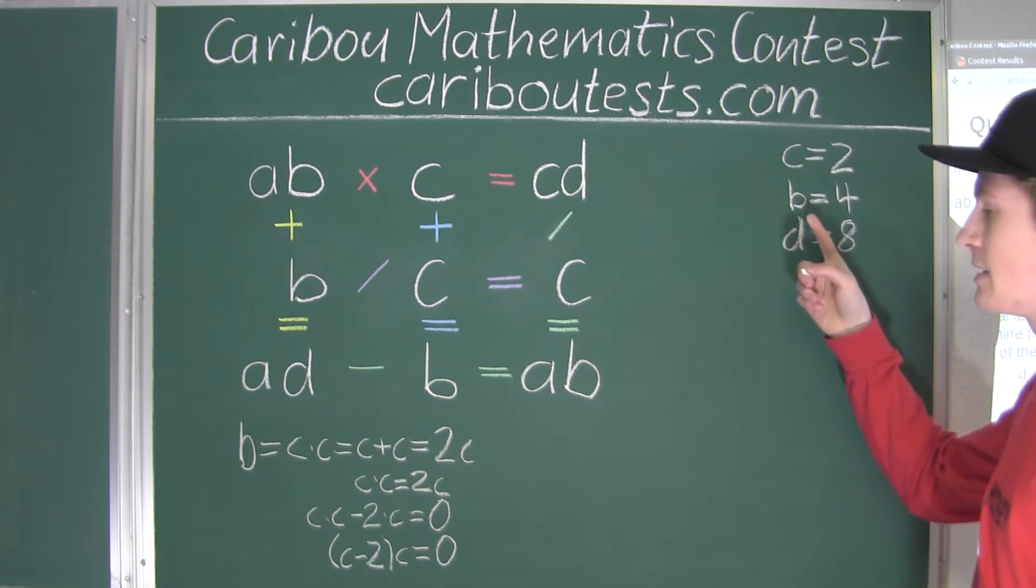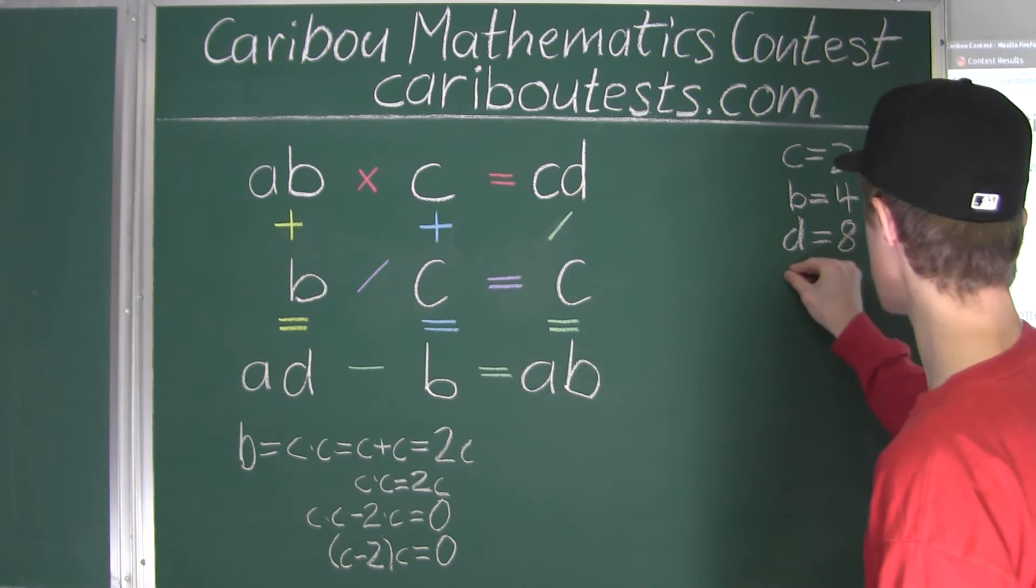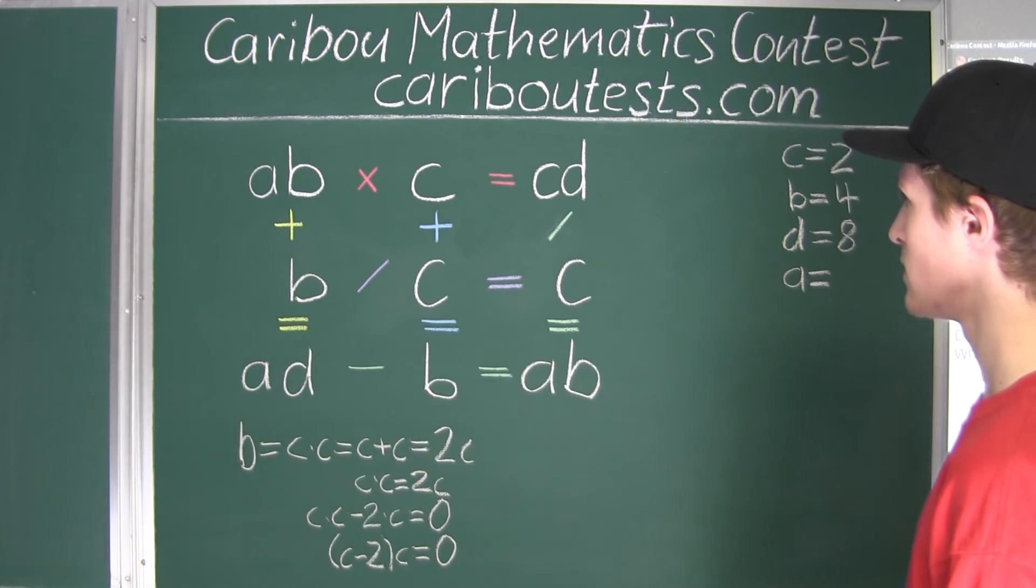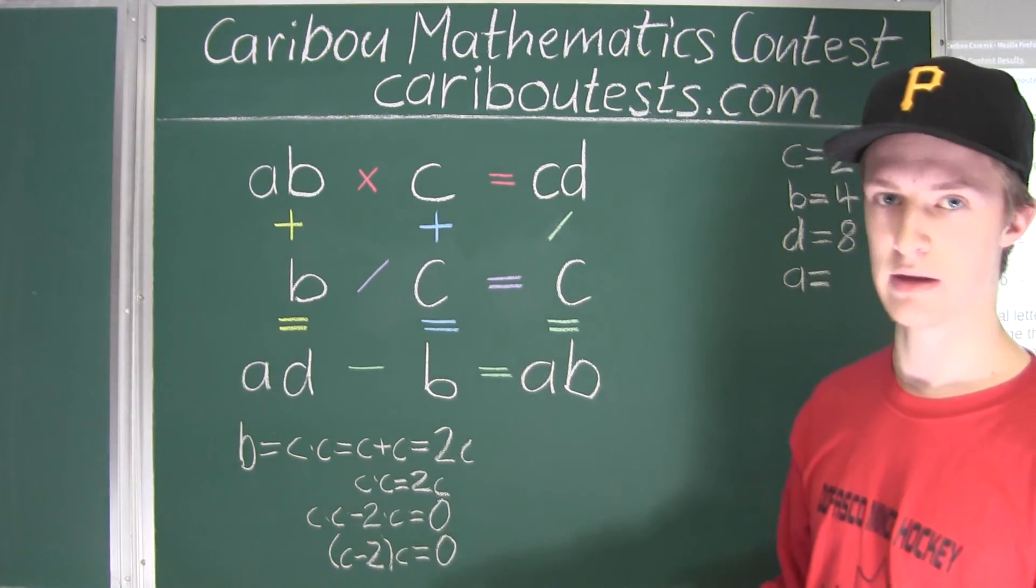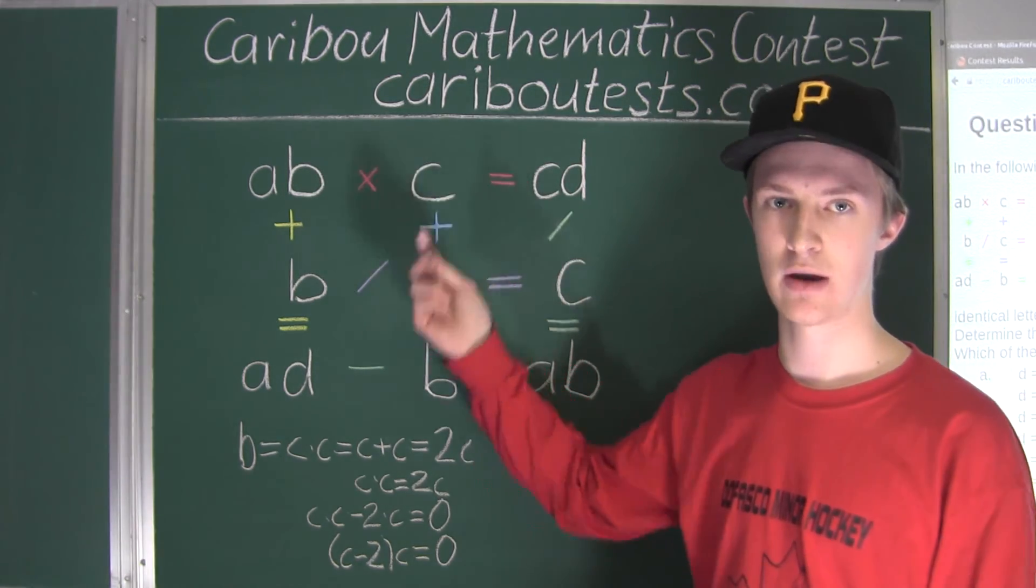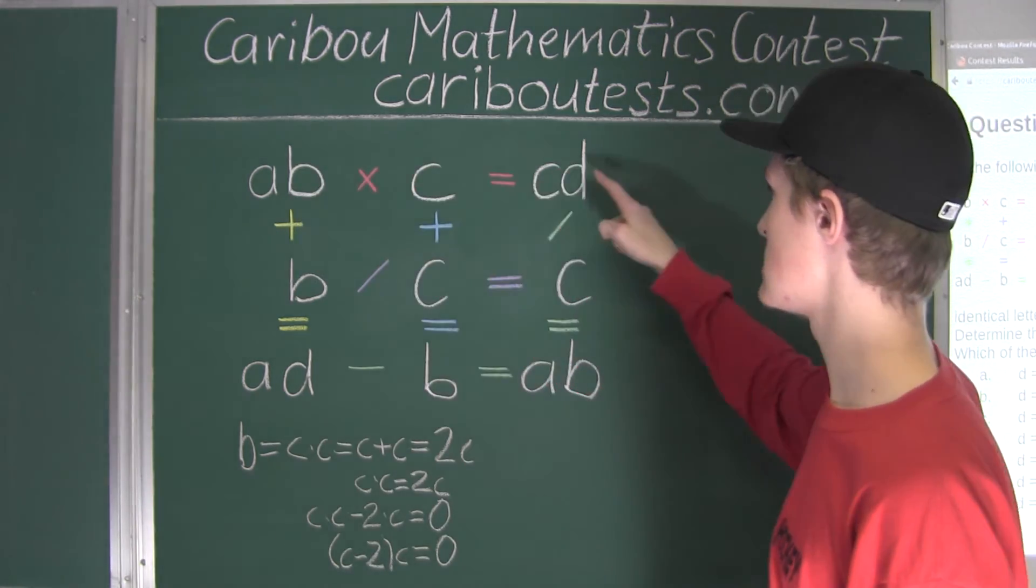So, we have the values for C, B, and D, and all we have to do now is find the correct value for A. Well, we need to now look for an equation that has, let's say, preferably A only showing up once. So, let's just look at this equation here.